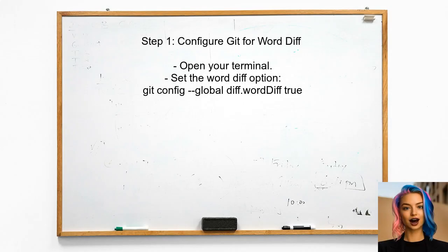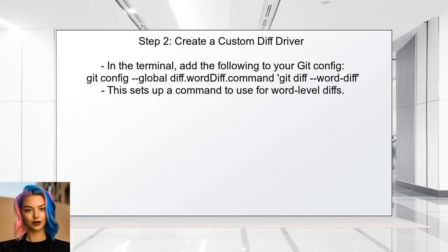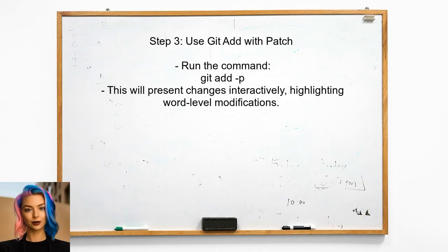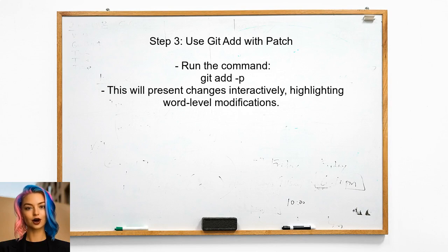To achieve the desired output, start by configuring git to use the word diff option. This will allow you to see changes at the word level instead of the line level. Next, create a custom diff driver in your git configuration — this driver will format the output to highlight only the changed words. Then use the git add command with the patch option, which allows you to review changes interactively, showing the word-level differences.